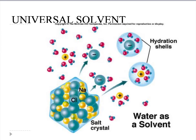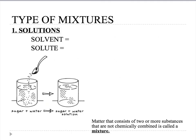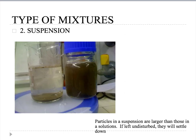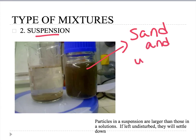Water is considered a universal solvent. When you mix salt and water, water is the solvent and the water particles surround and break apart the salt crystals. A solution is a type of mixture with a solvent — in this case water — and a solute, such as sugar. Another type of mixture is a suspension, like sand and water, where the particles are much bigger and will eventually settle to the bottom if left undisturbed.